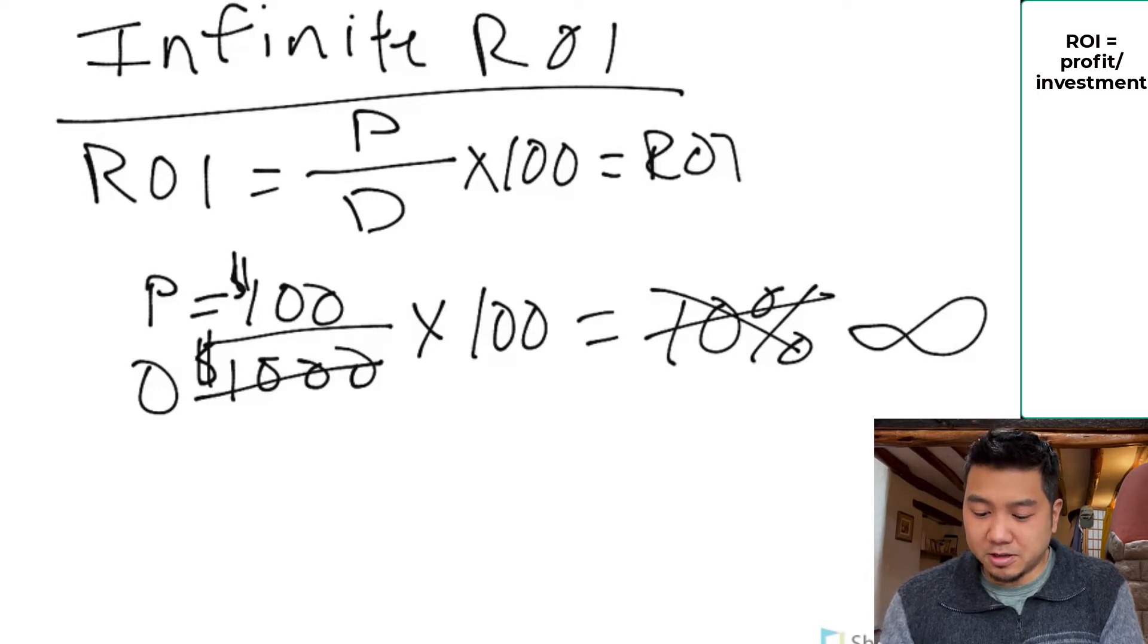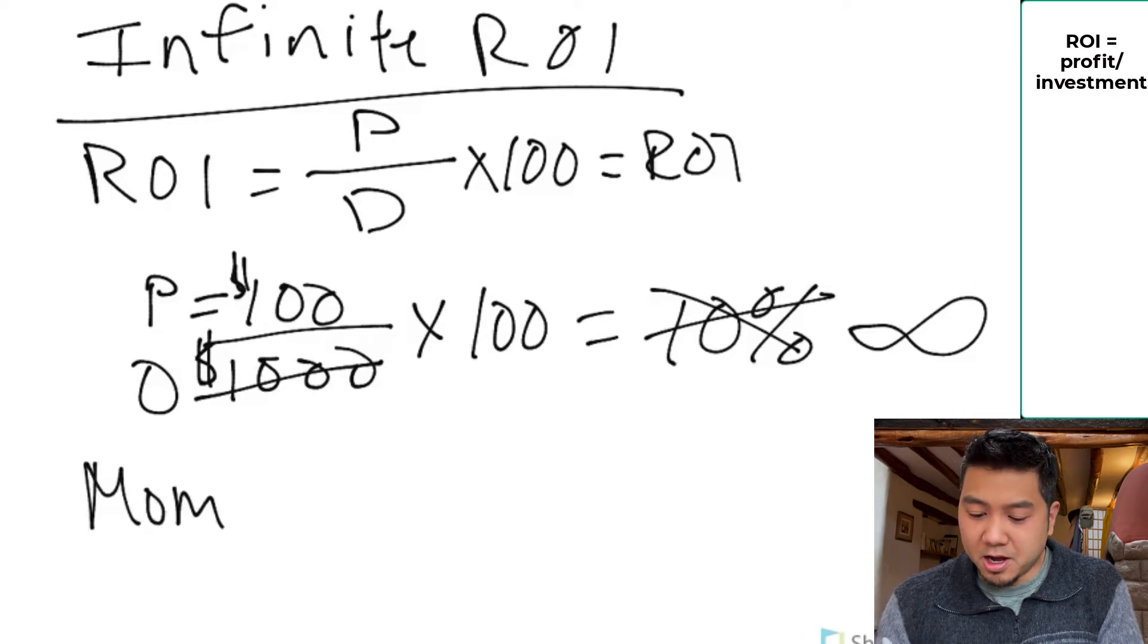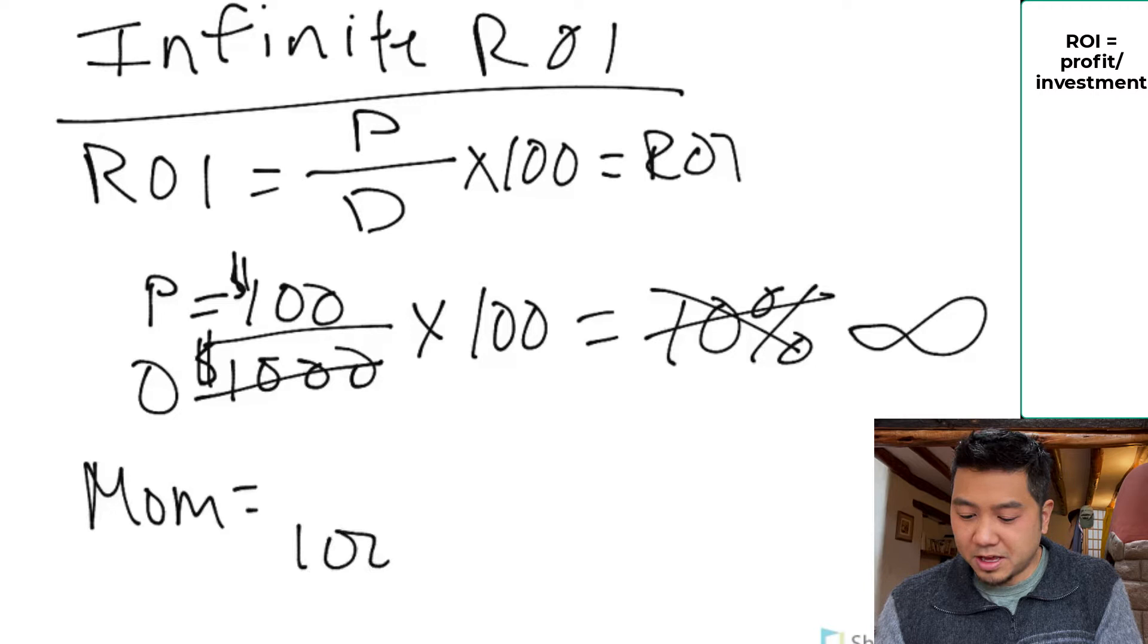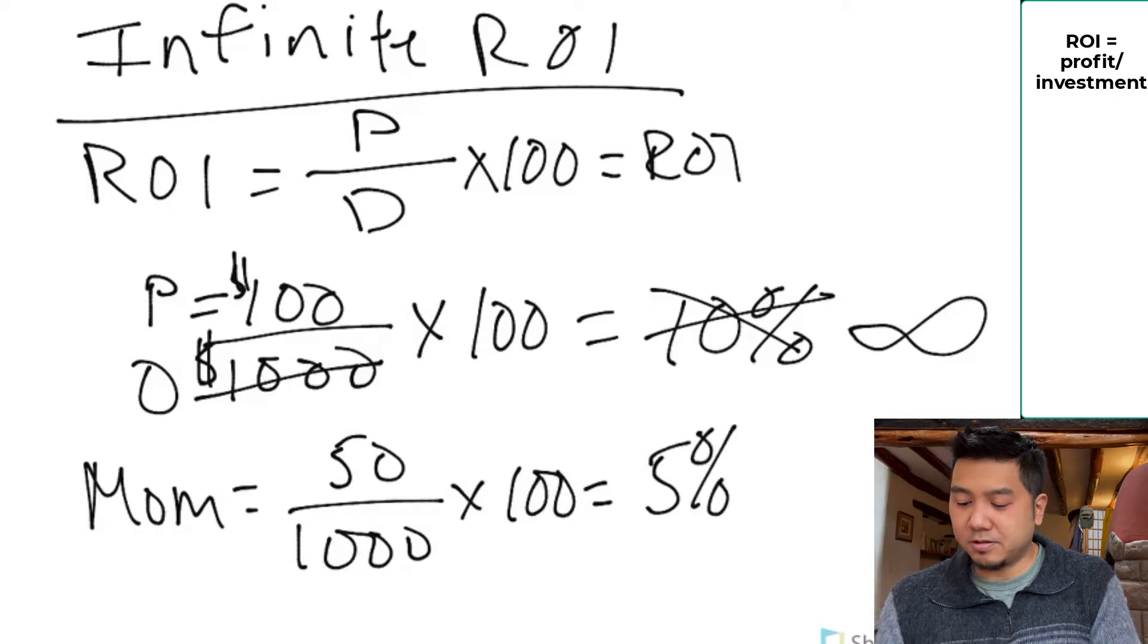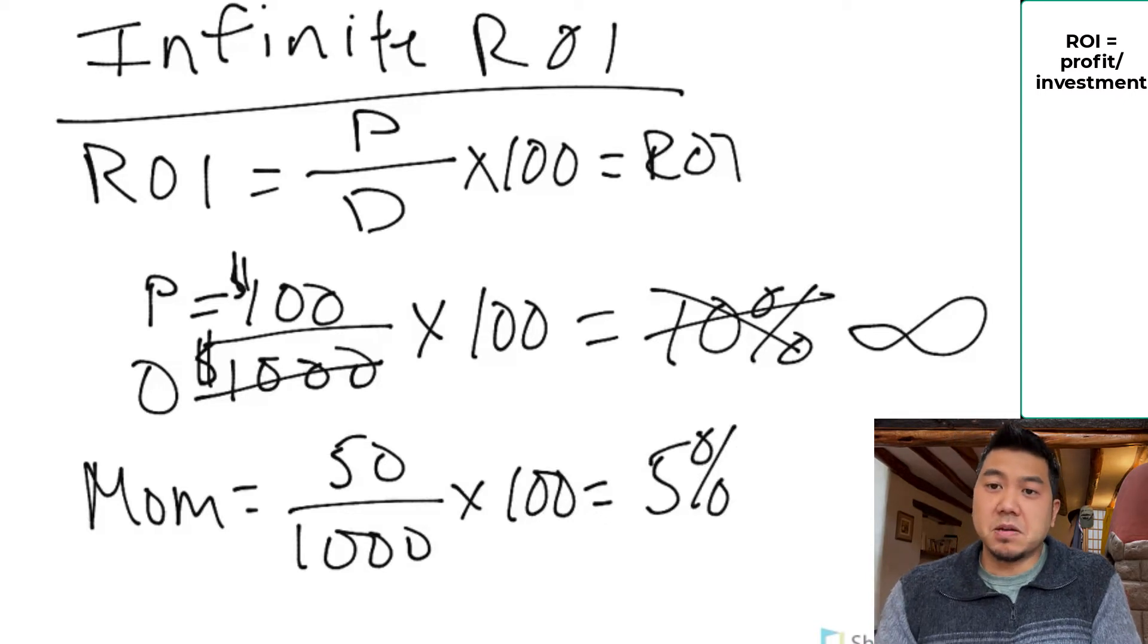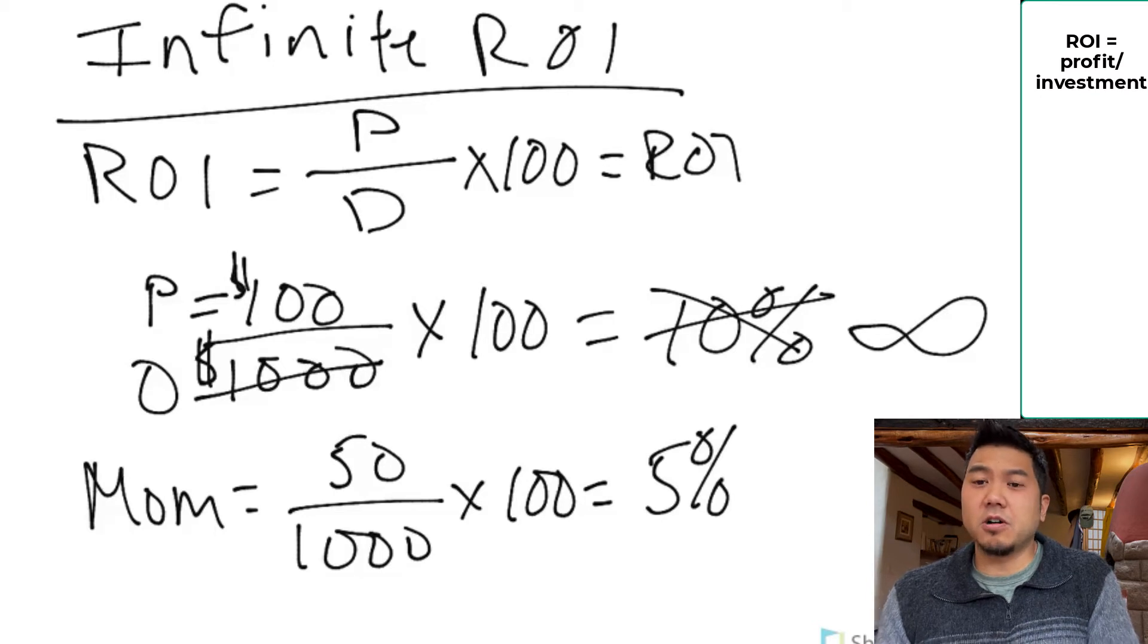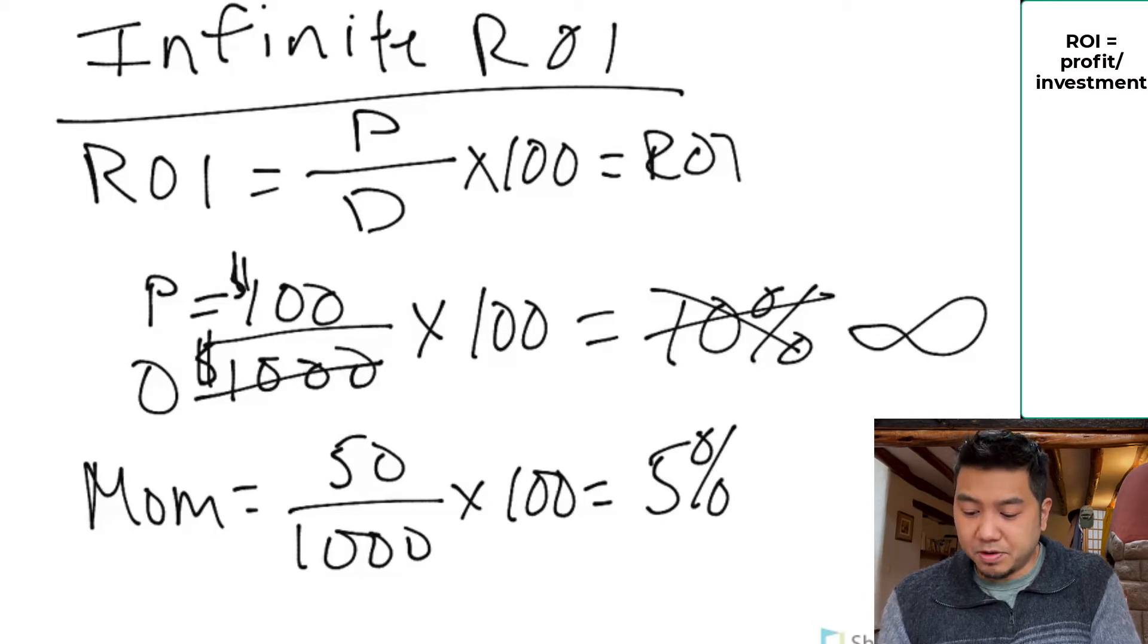So what does that math look like? Now for you, let's start with your mom. For your mom, she had to put $1,000 down. She's going to make $50 making her ROI 5%. Maybe this happens in a week. That's still very good ROI. Maybe two weeks. That's still pretty decent as well.